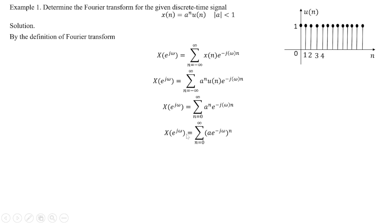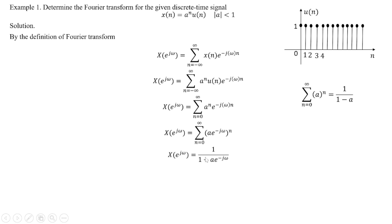With the unit step applied, x(n) = a^n for n ≥ 0. The summation becomes: summation from n = 0 to infinity of (a · e^{-jω})^n. Using the geometric series formula, summation from n = 0 to infinity of a^n = 1/(1-a), we get X(e^{jω}) = 1 / (1 - a·e^{-jω}).